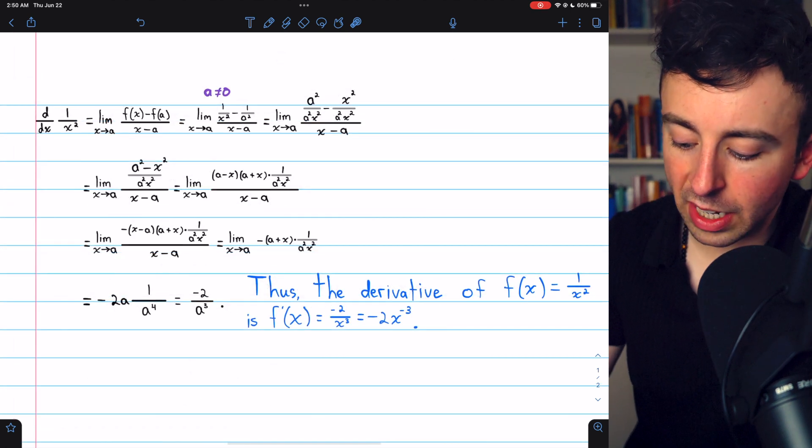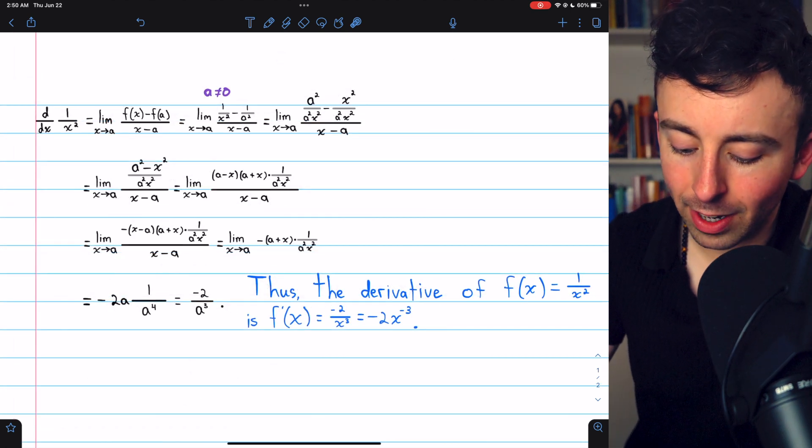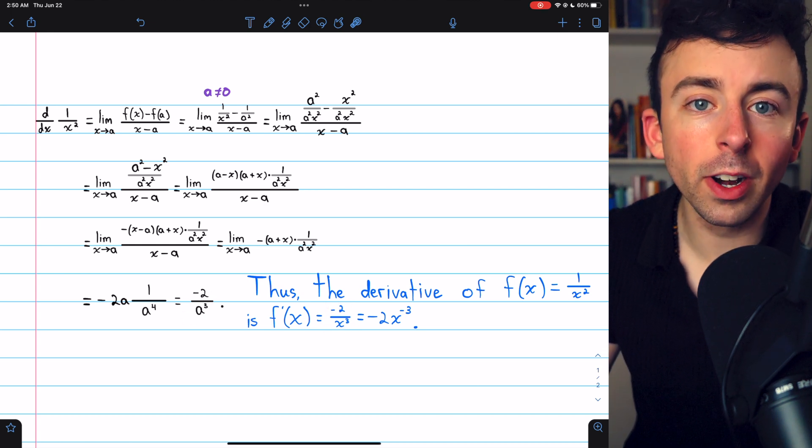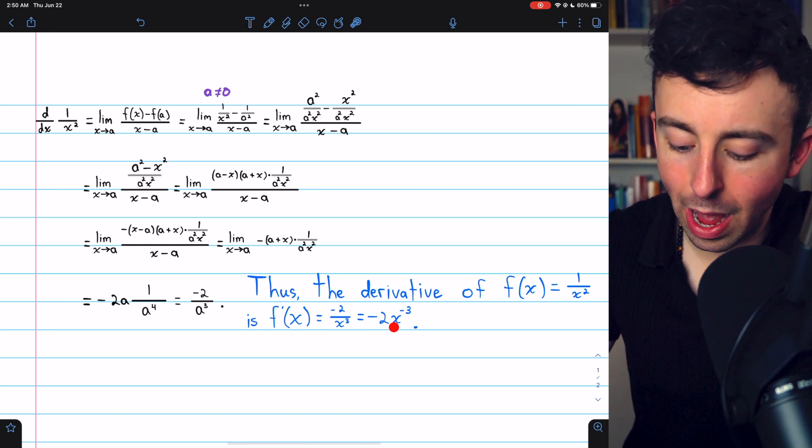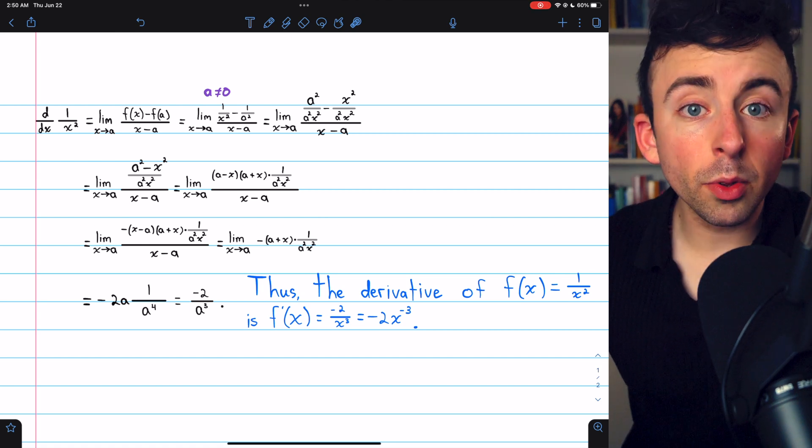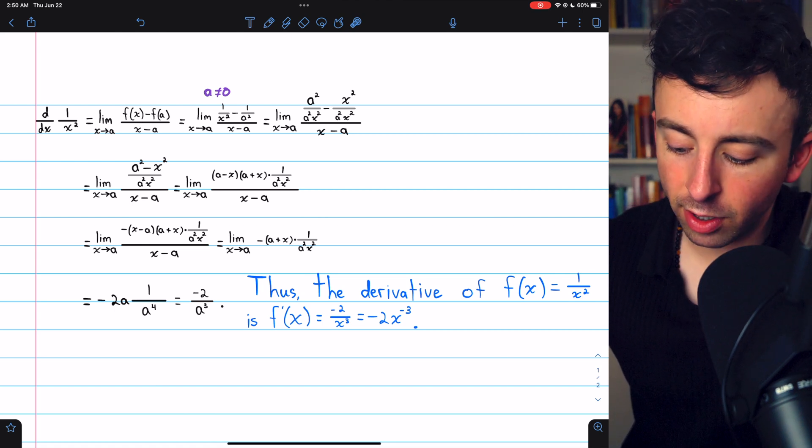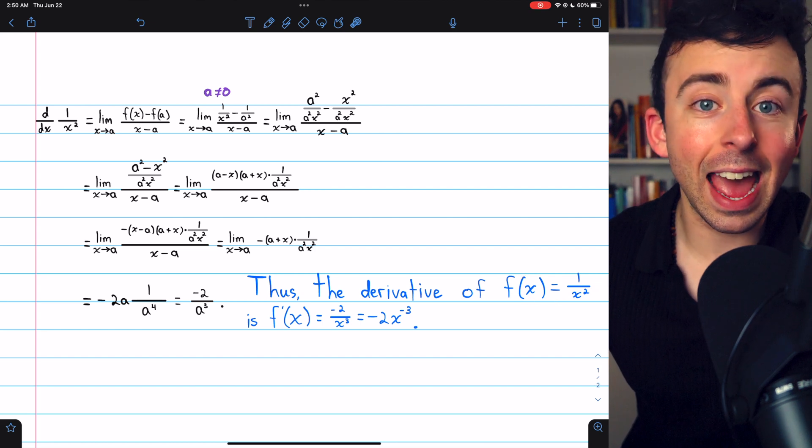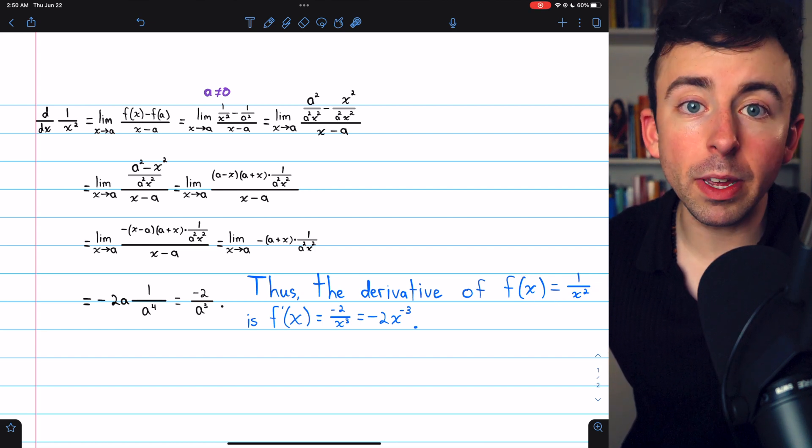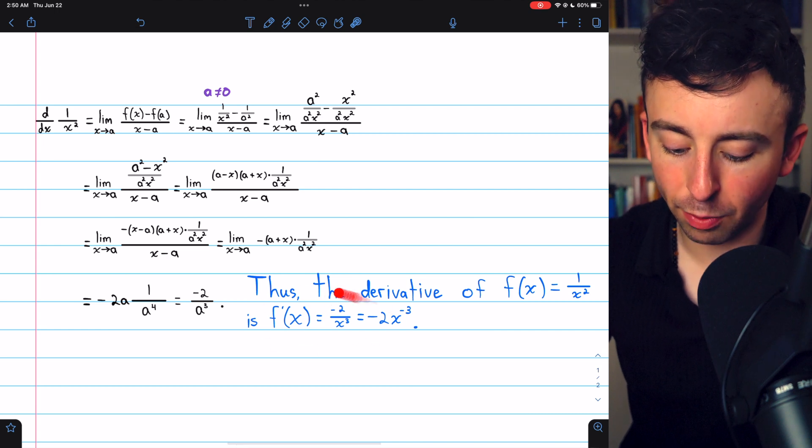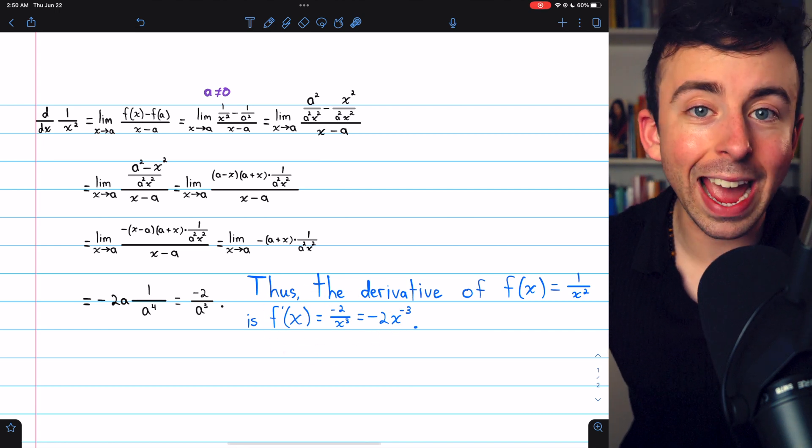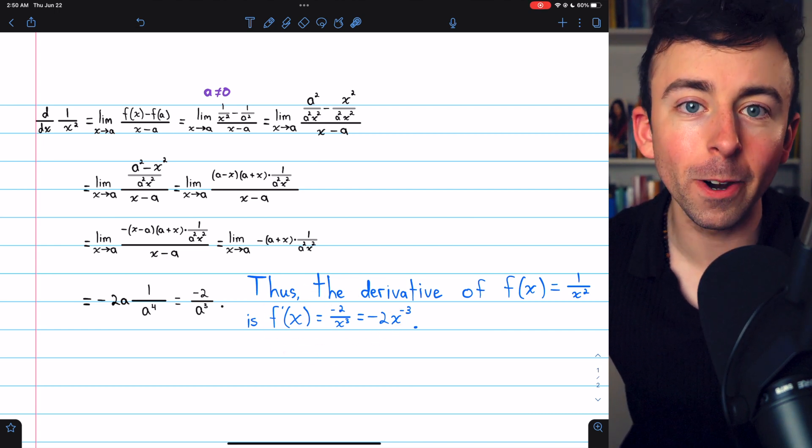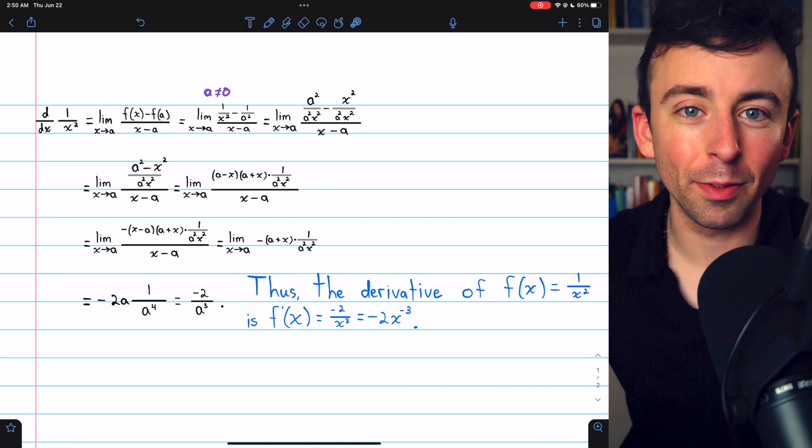Thus, we've proven the derivative of 1 over x squared is negative 2 over x cubed, which if you prefer, you could write as negative 2x to the negative 3. So the slope of the line tangent to 1 over x squared at any point, say x equals a, can be found by just plugging a into this function. You'll get negative 2a to the negative 3rd power. That's the slope of the tangent line. That's the derivative.